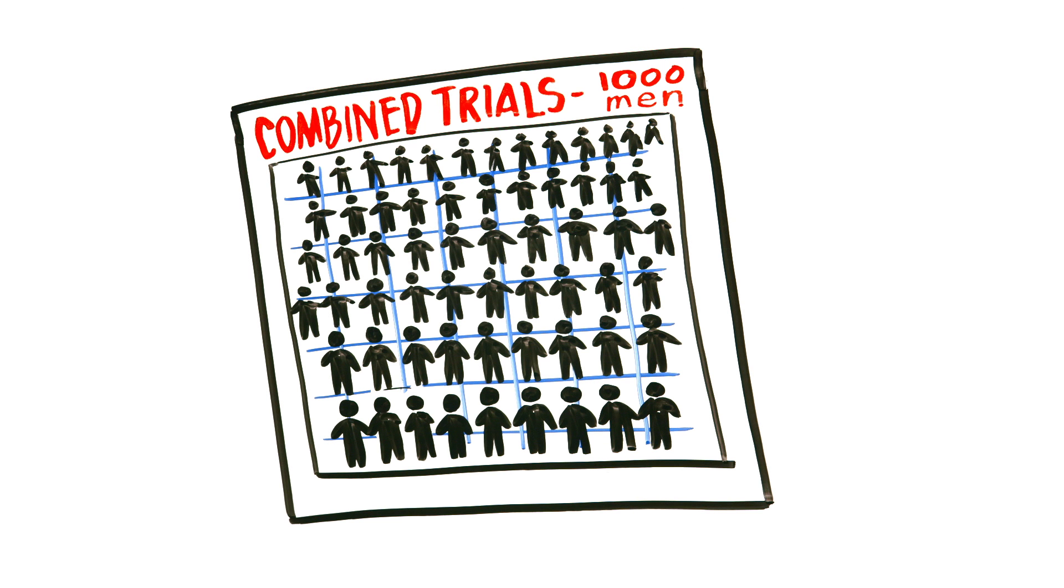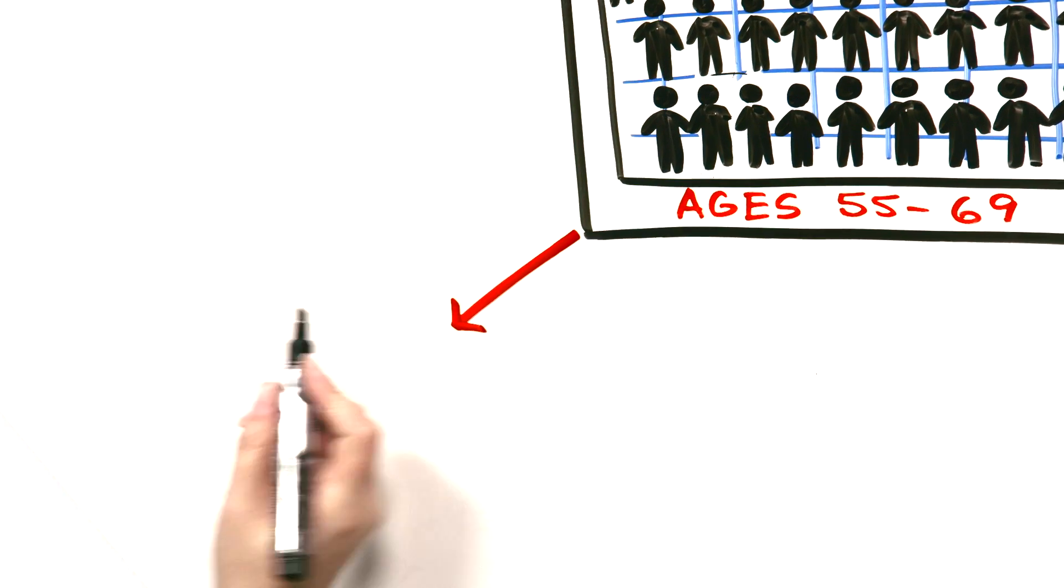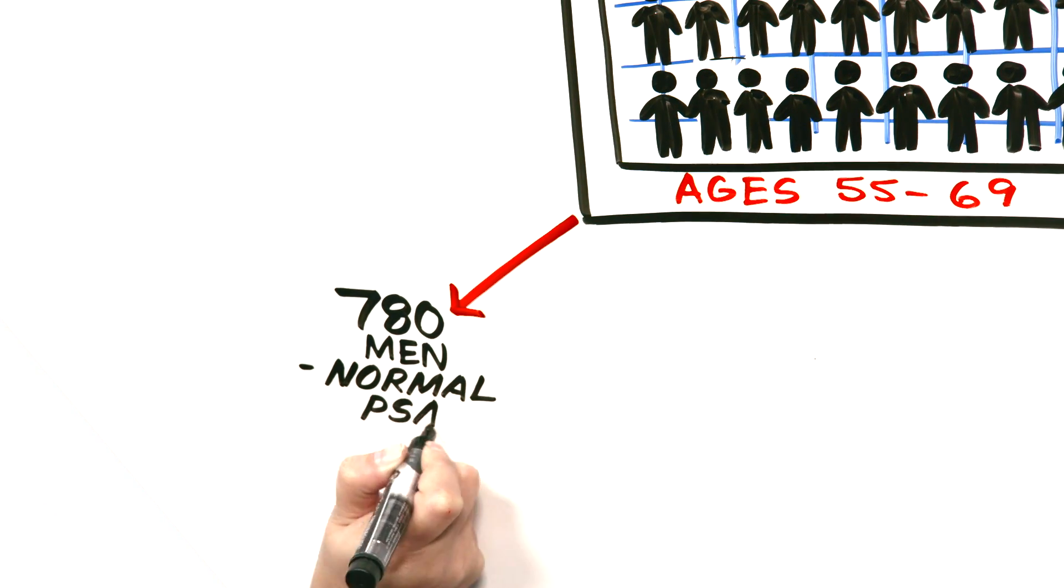If 1,000 men aged 55 to 69 were screened with PSA every 1 to 4 years for about 10 years, approximately 780 men would have normal PSAs. This is good news and would be reassuring to these men.